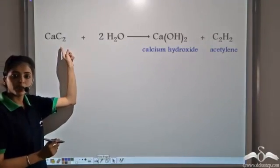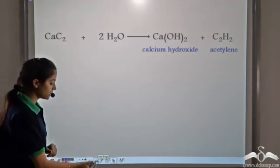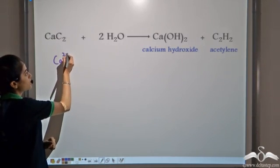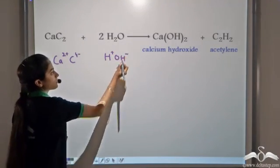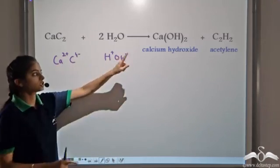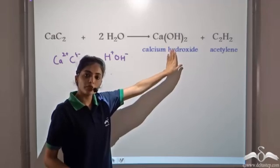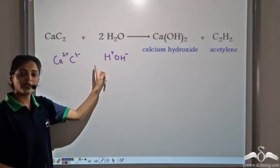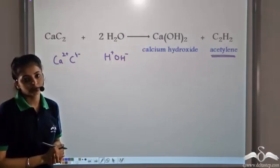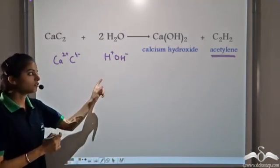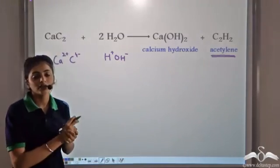Now let's look at the action of water on Calcium carbide (CaC₂). You see it forms a milky white solution, and a gas is released which catches fire. Calcium carbide exists as Ca²⁺ and C₄²⁻. When this reacts with H⁺ and OH⁻, Calcium goes with hydroxide to form Calcium hydroxide — the milky white solution we saw — and the Carbon reacts with Hydrogen to give Acetylene gas (C₂H₂), which is explosive and easily catches fire.